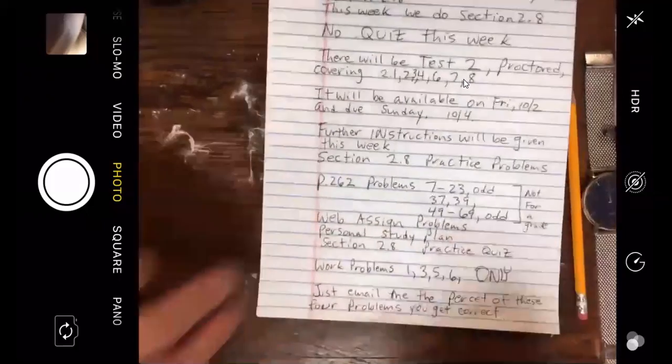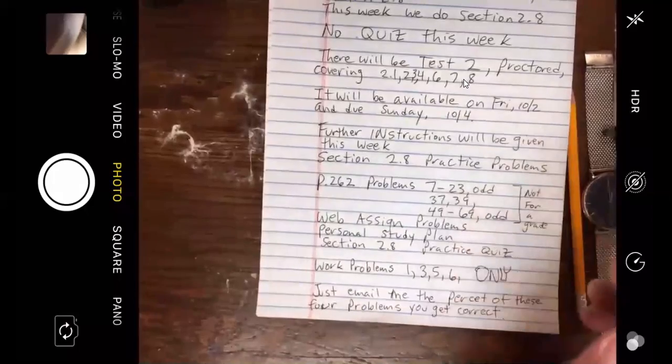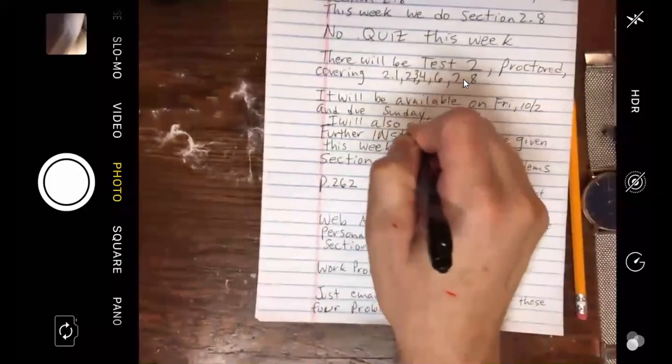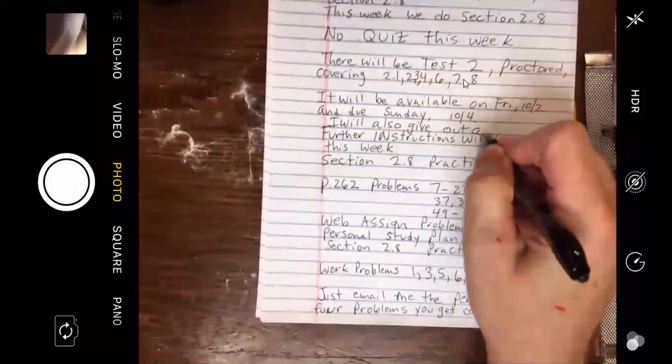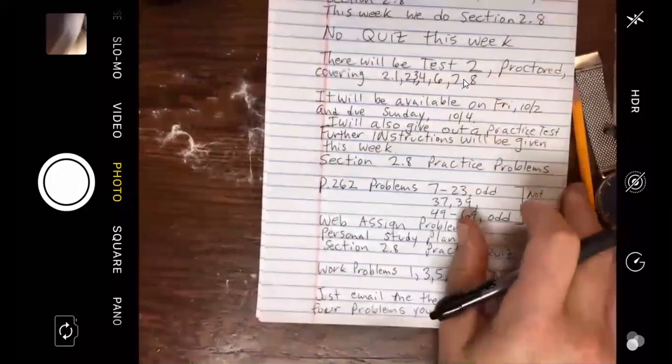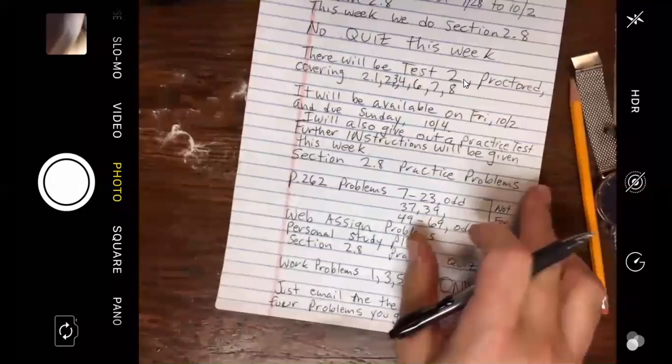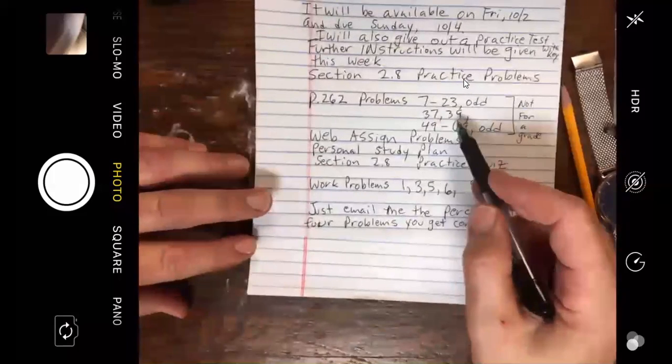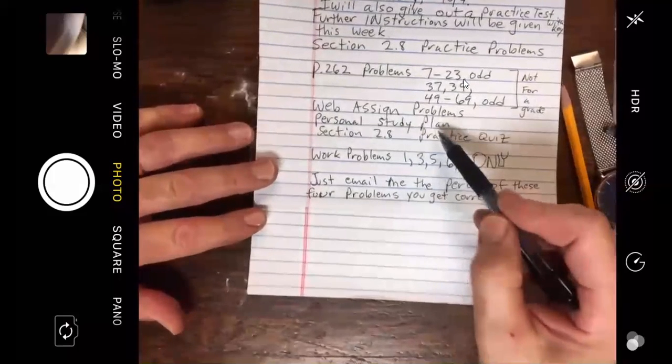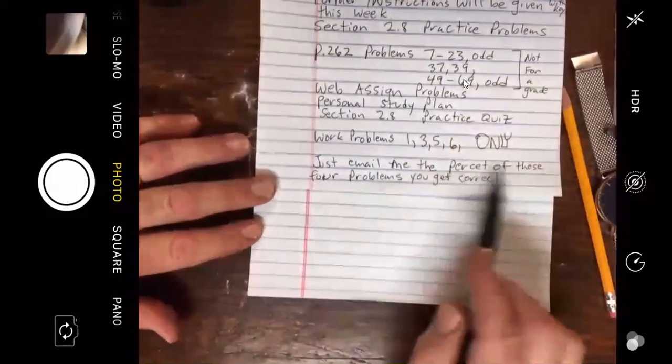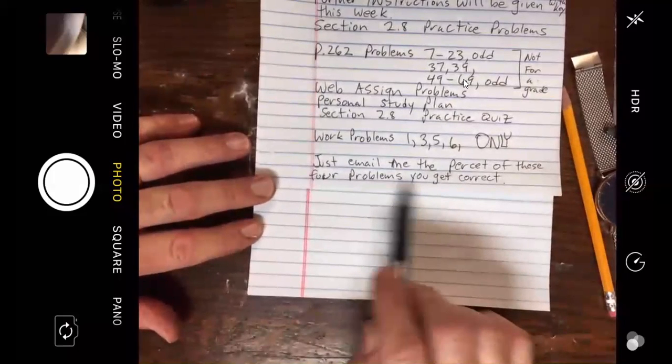We'll have the test available on Friday and due Sunday, just like the quiz. We will give further instructions this week. I will also give out a practice test with key this week. The practice problems from section 2.8, 7 to 23, 37, 39, and 49 to 69 odd. Web assign, section personal study plan, your section 2.8 practice quiz, just four of them, one, three, five, and six only. Just email me the percent of those problems you get correct.